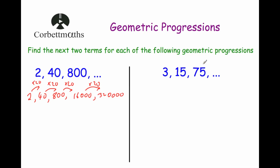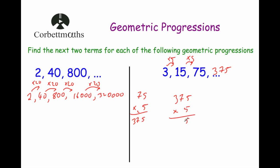Now we have 3, 15, 75. Looking at 3 and 15, I can see we are multiplying by 5 each time. Let's just check: 75 divided by 15 is 5. So multiplying by 5 again: 75 times 5 is 375. And 375 multiplied by 5 is 1875. Those are the next two terms.